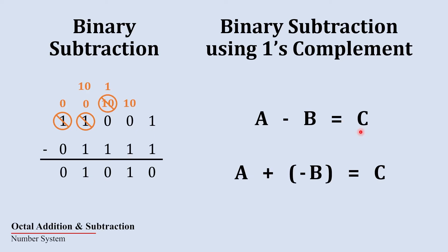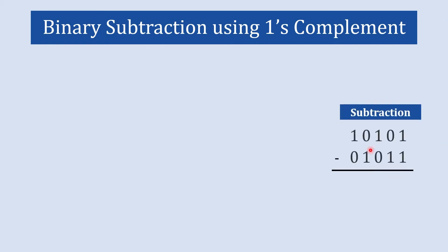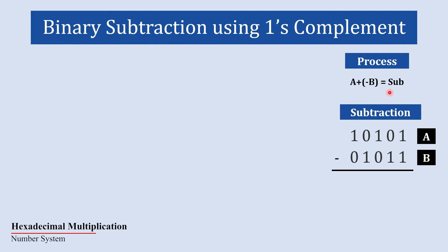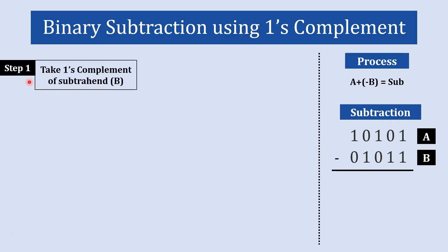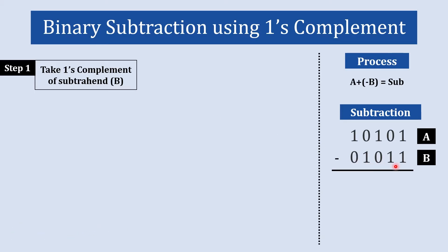Now let's understand this with an example, step by step. Here we have two numbers: a is our minuend and b is our subtrahend. In step number one, we need to convert the subtrahend into the one's complement form — that is, convert the number to be subtracted into its one's complement form.